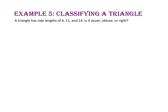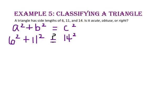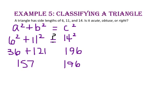In example 5, we will classify a triangle. A triangle has lengths of 6, 11, and 14. Is it acute, obtuse, or right? Remember, the longest side is going to be c, and a and b will be the shorter two sides. 6 squared is 36 and 11 squared is 121. 14 squared is 196. 36 plus 121 is 157. Since 157 is less than 196, c squared is greater than a squared plus b squared, making the triangle obtuse.